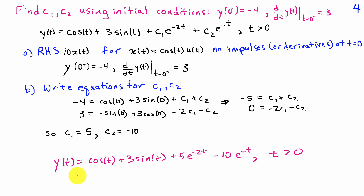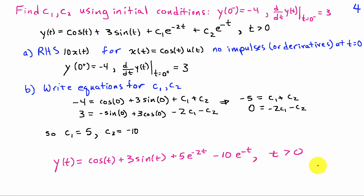Our final solution — the output of this system in response to the given input and initial conditions — is y(t) = cos(t) + 3 sin(t) + 5e^(−2t) − 10e^(−t), valid for t > 0.